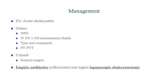For orders, we follow the typical surgical order set. She'll be NPO, receive maintenance fluids, type and cross match, and PT/PTT — always do this when a patient is going to need surgery. We'll consult general surgery. For empiric antibiotics in acute cholecystitis, we're going to give ceftriaxone — there are other options, but ceftriaxone is an easy choice. Then we'll proceed with urgent laparoscopic cholecystectomy.